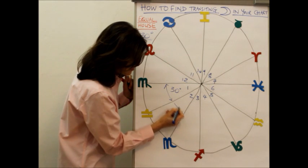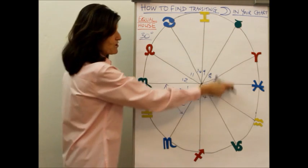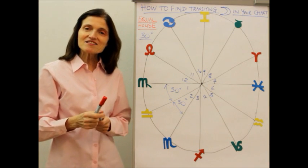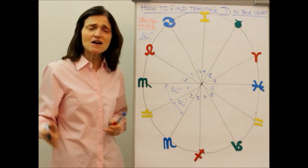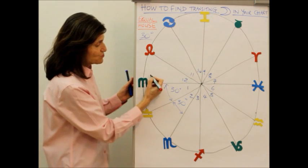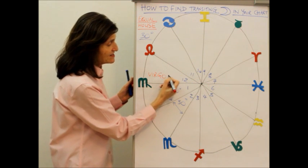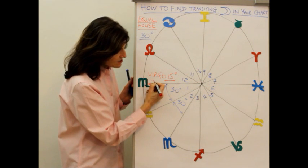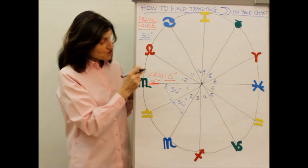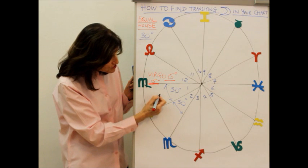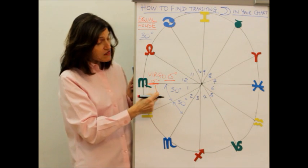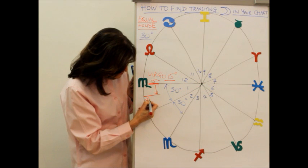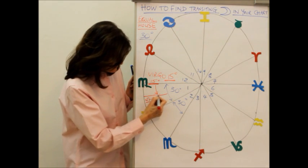Each of these segments is 30 degrees. The challenge can be that you may have an ascendant—I'm just taking a random example here. Let's say you are Virgo rising, Virgo with a 15 degree ascendant. So this line here, your ascendant, is starting at 15 degrees. Your first house is 15 to 30 degrees of Virgo, because there are only 30 degrees of a sign, and also the first 15 degrees of Libra is your first house.